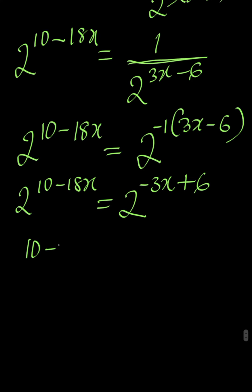So we can write that 10 minus 18x is equal to minus 3x plus 6.